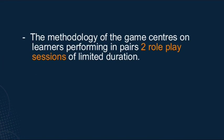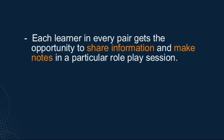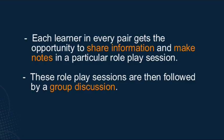The methodology of the game centres on learners performing in pairs two role-play sessions of limited duration. One session is dedicated to identifying the characteristics of a not-so-perfect entrepreneur, and the other to identifying the characteristics of a perfect entrepreneur. Each learner in every pair gets the opportunity to share information and make notes, and these role-play sessions are then followed by a group discussion.